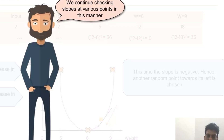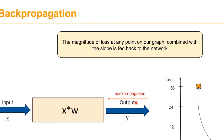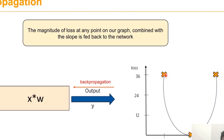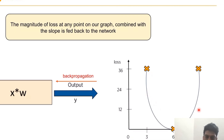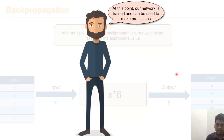We continue checking slopes at various points. Backpropagation is the process of updating the weights in order to reduce the error. The magnitude of the loss at any point on the graph, combined with the slope, is fed back to the neural network. A positive slope always indicates the change in weight must be a positive number.